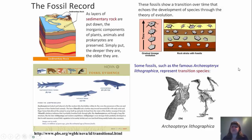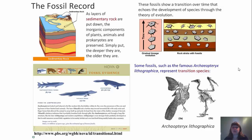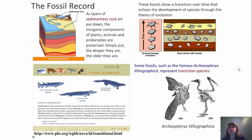Some fossils, such as the famous Archaeopteryx, represent a transition species. We'll also be looking at a transition species called Tiktaalik in class. Transition species are really good fossil examples to show how there was change from one type of species to another — in this case, from Archaeopteryx to a common bird.